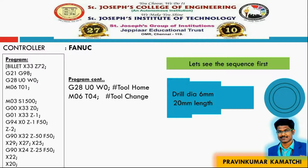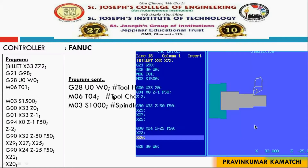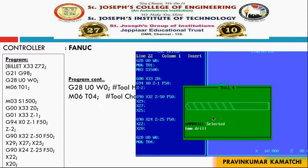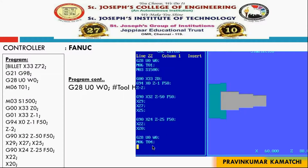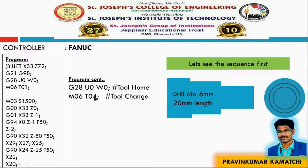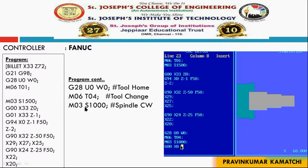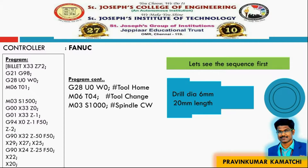The next sequence is drilling, so we have to change the cutting tool. First, return the turning tool to its home position using G28 U0 W0. Then we can change the cutting tool to the drill bit. The drill bit number is T04, so give the instruction M06 T04. Then start the spindle rotation with M03 S1000, and position the tool correctly — since we are drilling, the tool has to be aligned on the axis of the workpiece.